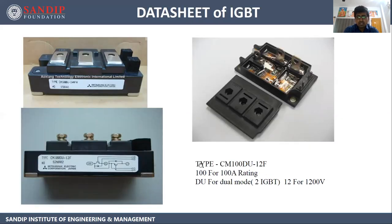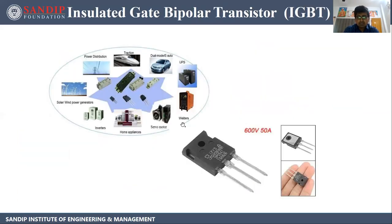Here is a figure of an IGBT example: CM100DU-12F, where 100 indicates 100 A rating, DU for dual mode (meaning 2 IGBTs), and 12 for 1200 V. Applications of IGBT include home appliances, servo motors, welders, inverters, solar and wind power generators, power distribution, traction, UPS, dual mode, and electric vehicles.